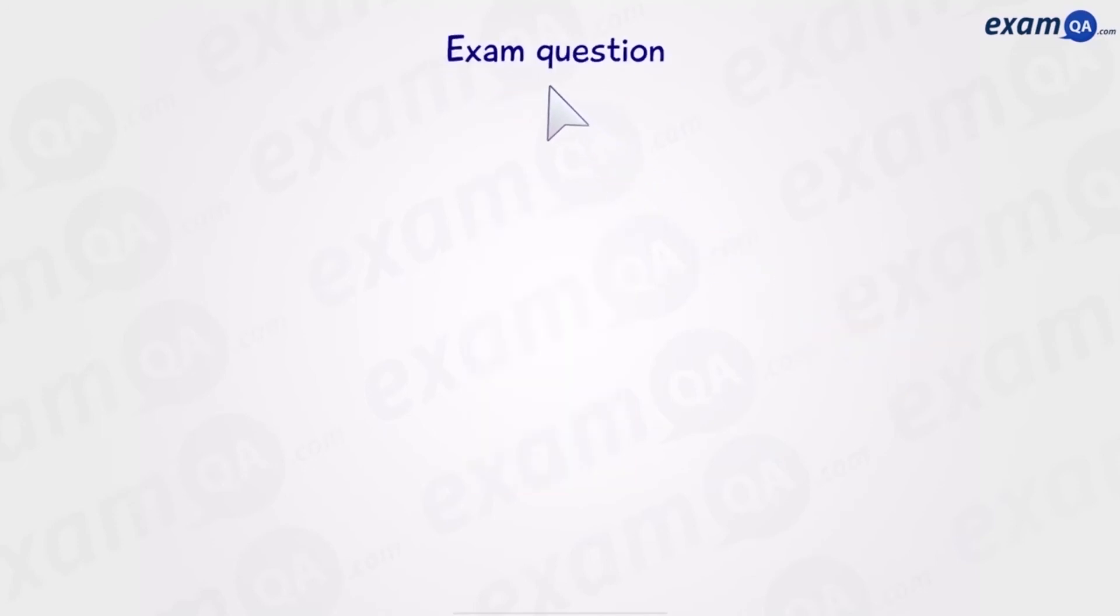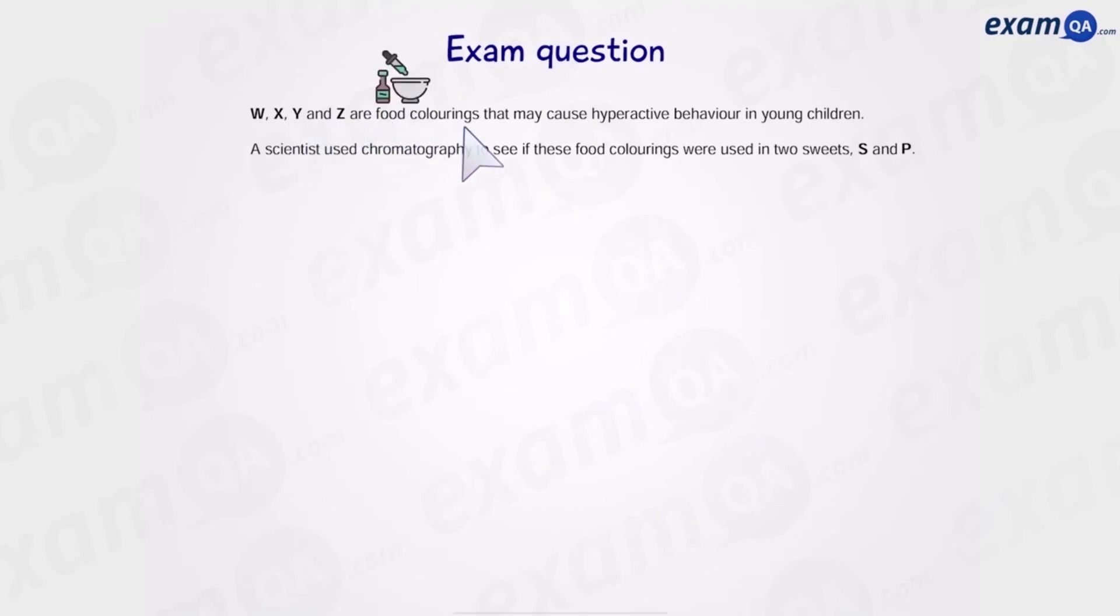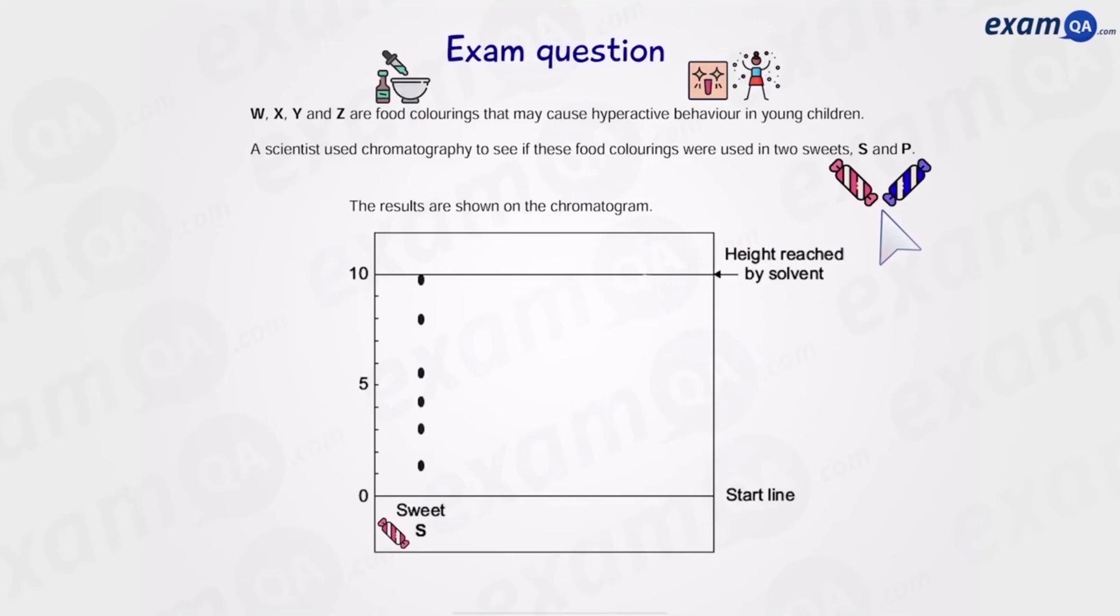Okay let's move on to an exam question. W, X, Y and Z are food colorings that may cause hyperactivity behavior in young children. A scientist used chromatography to see if these food colorings were used in two suites S and P. The results are shown on the chromatogram. So here we have the results for suite S, suite P, and for reference the food colorings W, X, Y and Z.